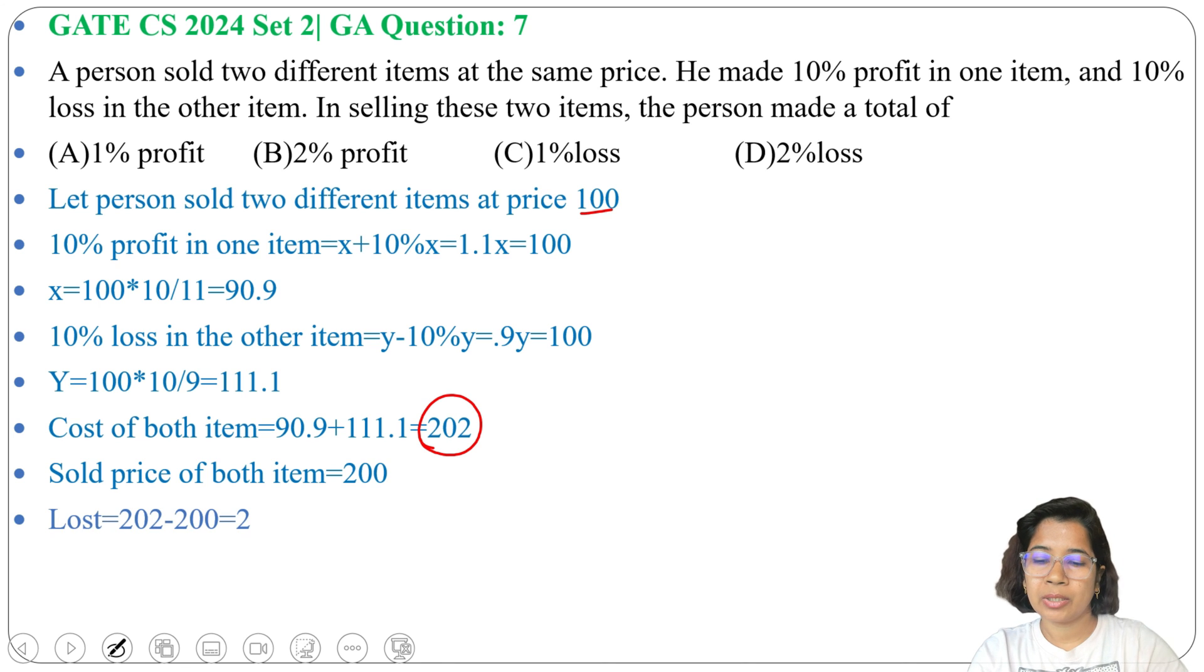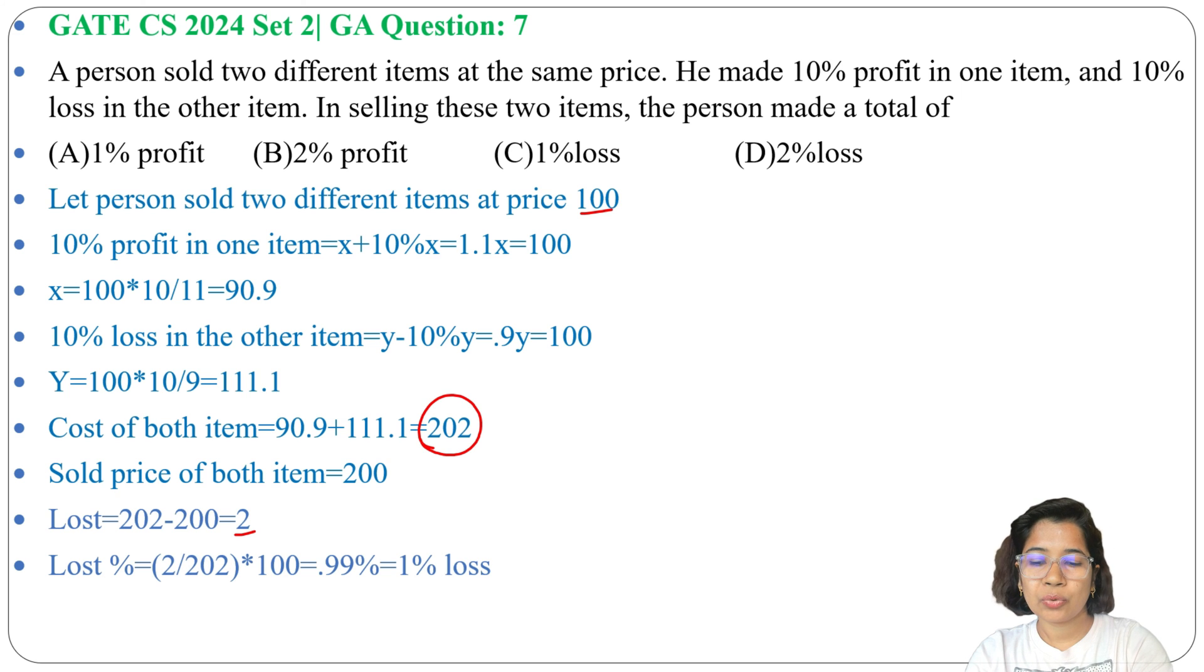How much percentage is 2 rupees? 2 divided by 202 times 100 equals 1% loss. It's present in option C, so the answer is option C.